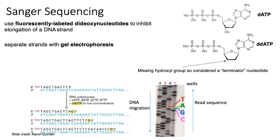The classic Sanger sequencing protocol requires a single-stranded DNA template, a primer to anneal to the start of the template strand, DNA polymerase, standard deoxynucleotides (dNTPs), and fluorescently labeled dideoxynucleotides (ddNTPs). After the primer anneals, DNA polymerase elongates using the standard dNTPs. But as soon as a dideoxynucleotide gets incorporated, elongation stops because ddNTPs lack the 3-prime hydroxyl group needed to chain two nucleotides together.